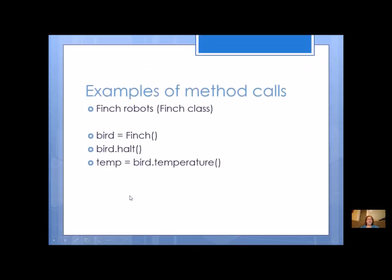Here's examples of method calls using our Finch robot. So first I have to declare an object from the Finch class, and I use this as my object. So bird dot halt and bird dot temperature. My object name must come first, and then the method comes after it. So I have to use my dot notation. Anytime I have a method, object dot method, and I have to have my parentheses. It's not going to give you an error if you don't have the parentheses, but it's not going to call the method either. So absolutely nothing happens and you won't really realize what's going on. So look for those parentheses.